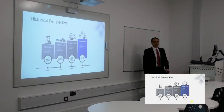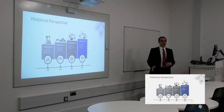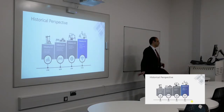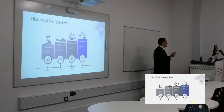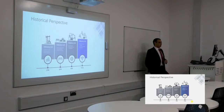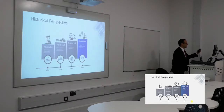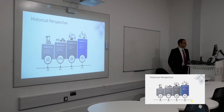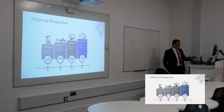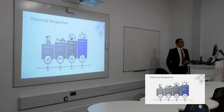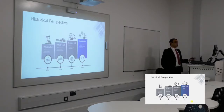To start with, we have the industrial revolutions. The first industrial revolution was about steam engines and mechanical engines. Then industry two was mass production assembly lines, and industry three is automation — it's mainly built around automation.